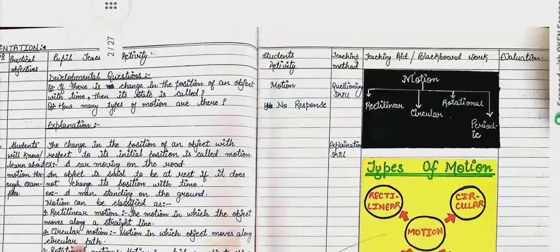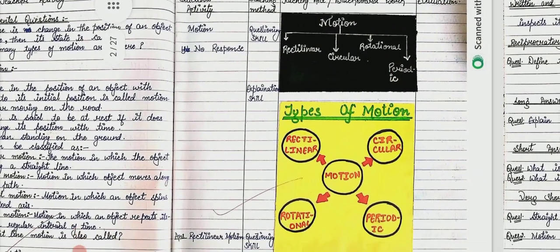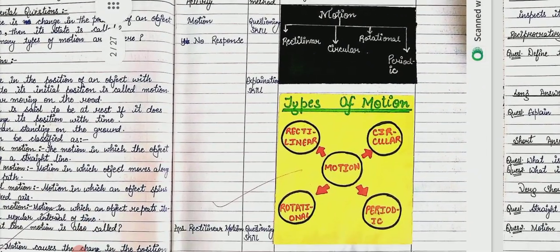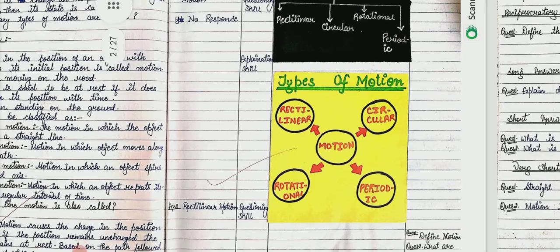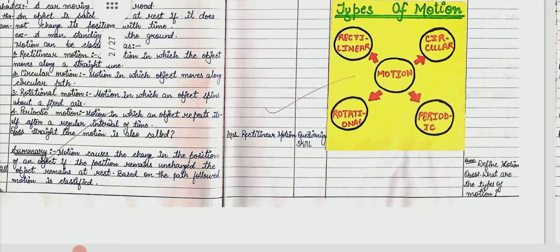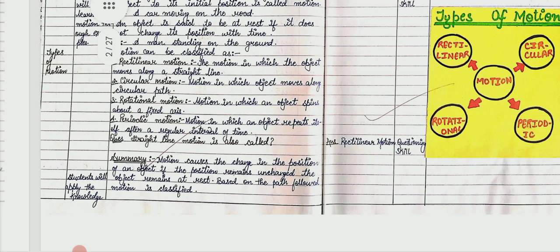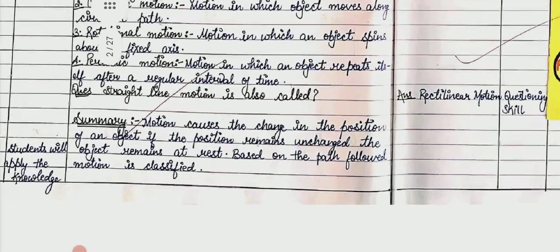For teaching aids and blackboard work, we show a miniature of our chart and a miniature of our blackboard. You always stick the chart miniature above your blackboard miniature. After the question, we give a summary to students.